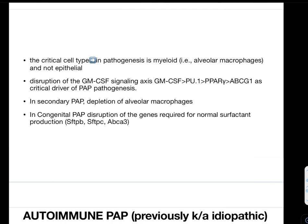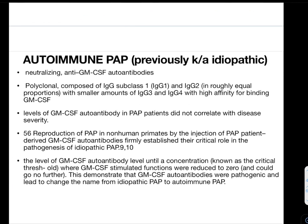The disruption of GM-CSF signaling axis involves critical factors including GM-CSF, PU.1, PPAR gamma, and ABCG1 — from most to least important in the pathogenesis. In secondary PAP, depletion of alveolar macrophages occurs due to various diseases. In congenital PAP, disruption of genes required for normal surfactant occurs, involving surfactant protein B, surfactant protein C, and ABCA3.